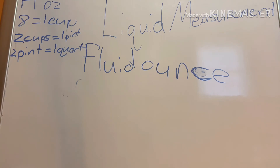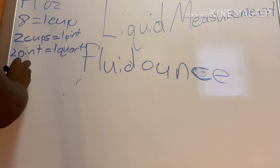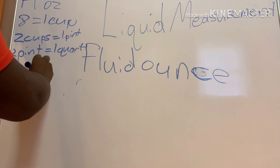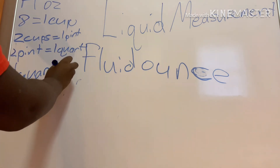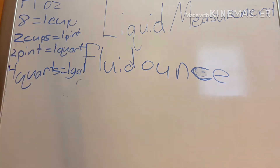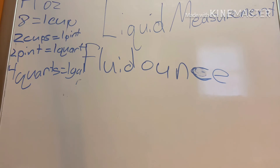So four quarts equals one gallon. Here's a memory trick: the word 'quart' means four — four quarters. If you think of it like fractions, four out of four equals a whole, so four quarts makes one complete gallon.